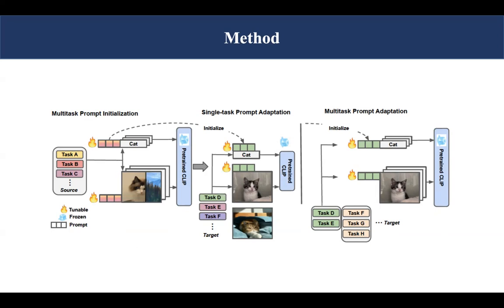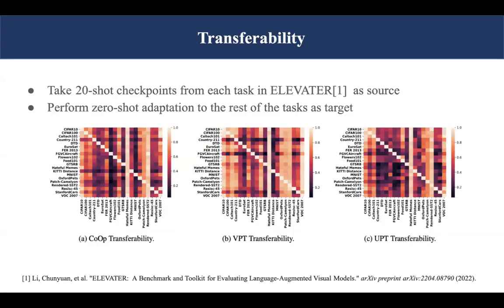Multi-task adaptation fine-tunes the prompt on a group of tasks. To determine how to group the tasks, we conduct transferability experiments by taking 20-shot checkpoints from each task as source and perform zero-shot experiments to the rest of the tasks as target. The group forms by taking tasks with top zero-shot performance.